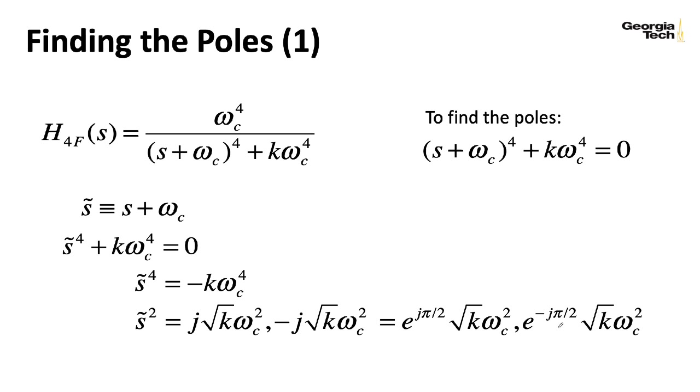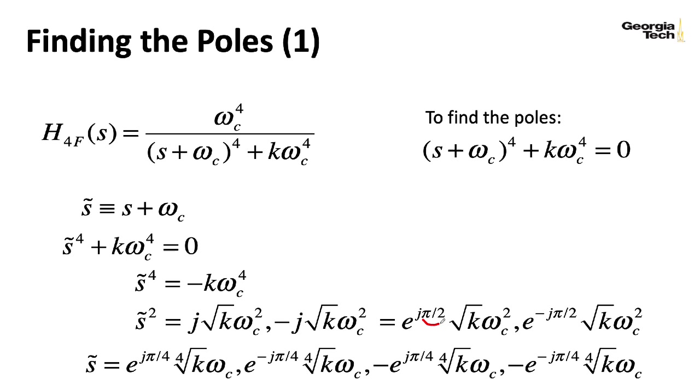And now I can take another square root. Basically, I'm taking everything to a power of 1 half. And when I do that, I wind up with this 1 half giving me a 1 fourth. I wind up with this minus over half turning into a minus over fourth. The square root of k now turns into a quarter root, quartic root, whatever you want to call that. And the omega c squared just turns into an omega c.